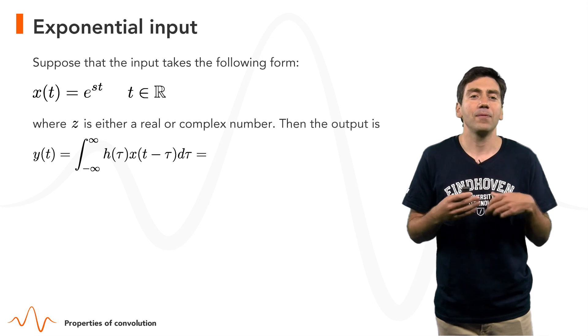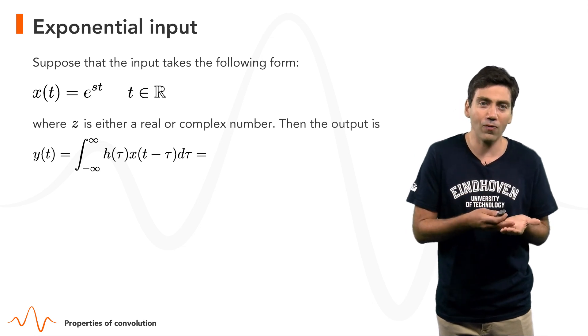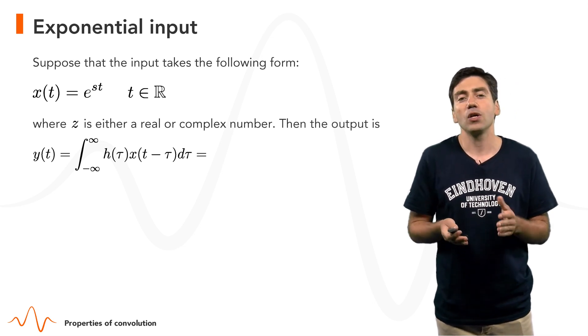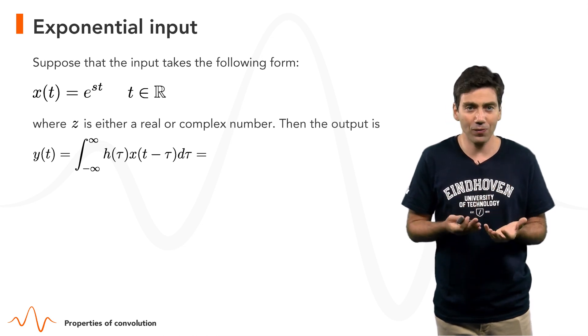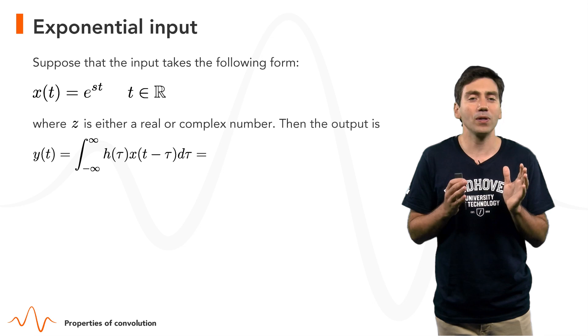And here we use the formula of the convolution between h and x, as opposed to the convolution between x and h, just because it's more convenient and they lead always to the same result.